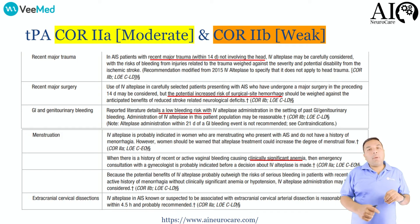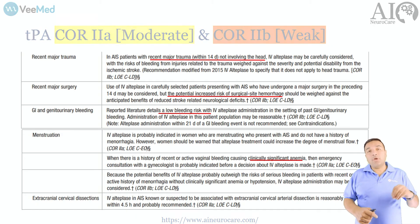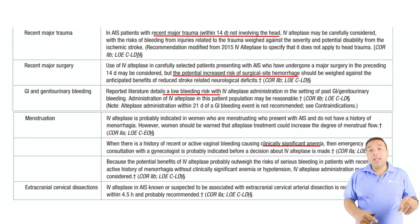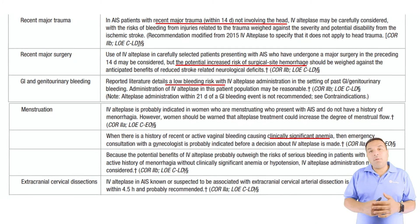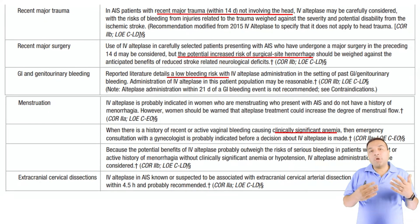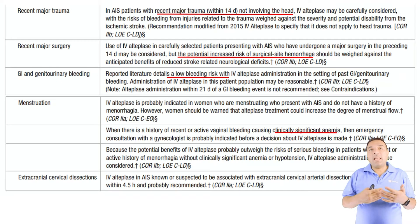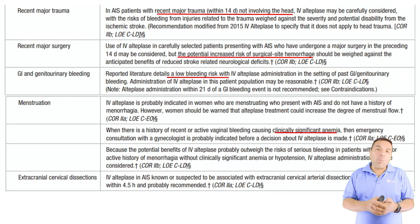Recent major trauma within the last 14 days — not involving the head — you should discuss the risks and benefits with the family and consider giving TPA. This is a weaker class 2b recommendation.